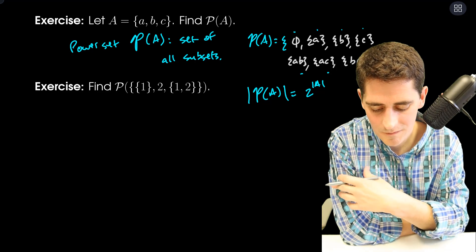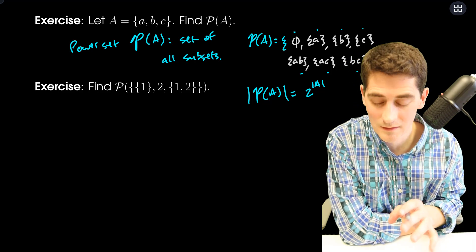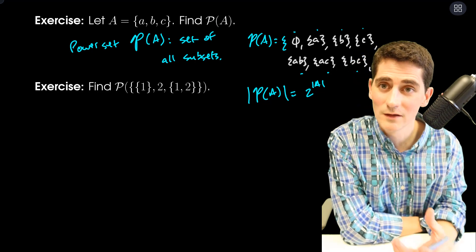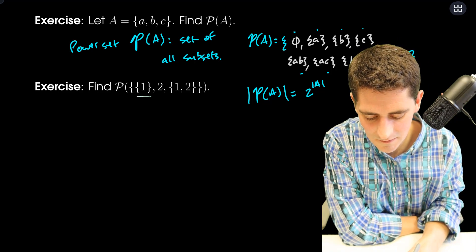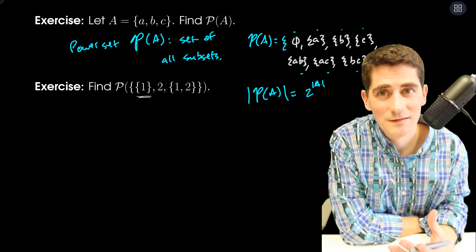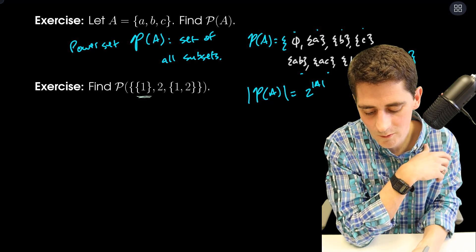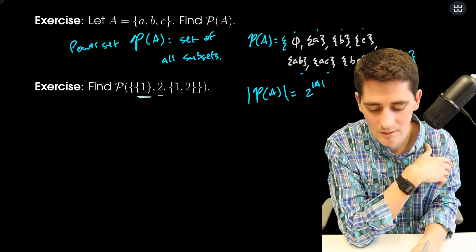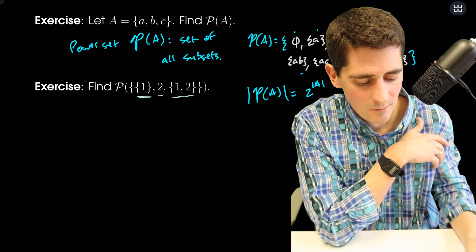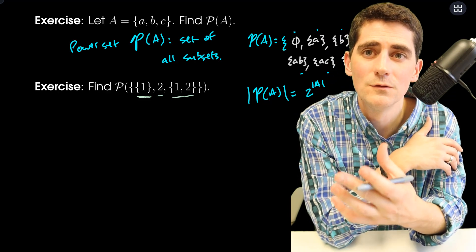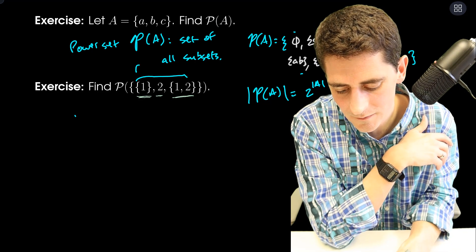Now I want to look at the power set of this set. It's got some weird-looking stuff in it, so let's figure out how many things are in our set. I have this thing — {1} is an element, the number 2 is an element, and then the set {1, 2} is an element. So I have three things, which means my power set would have two cubed: eight elements. Let's call this set B.